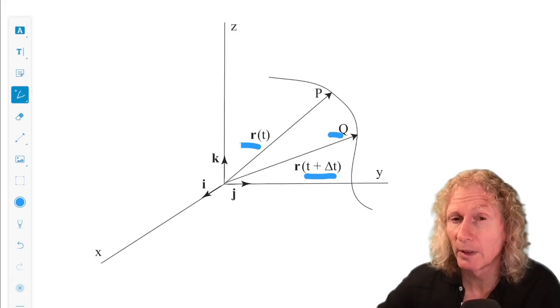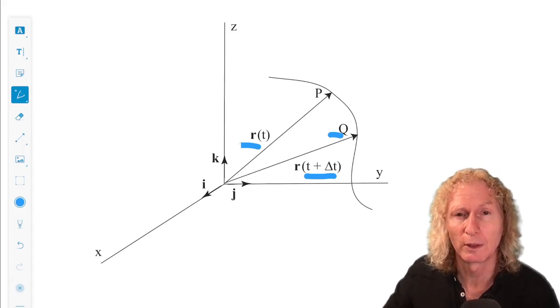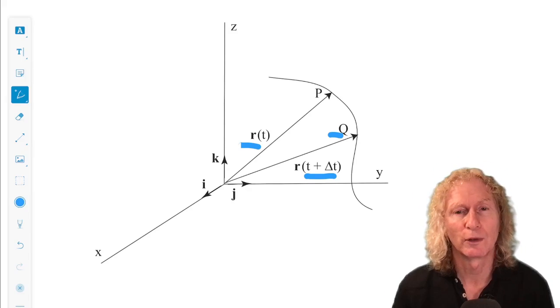And in that way, the tip of the vector R of t, which has a location x of t, y of t, z of t in the i, j, k coordinates, or vector coordinate system, traces out a curve in space.